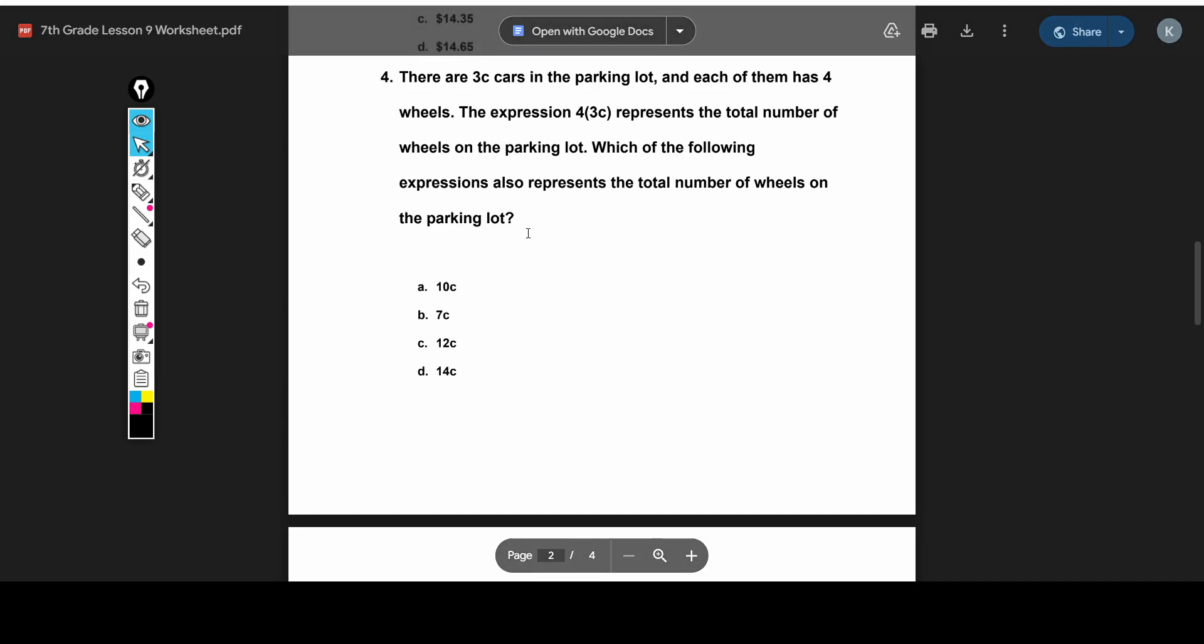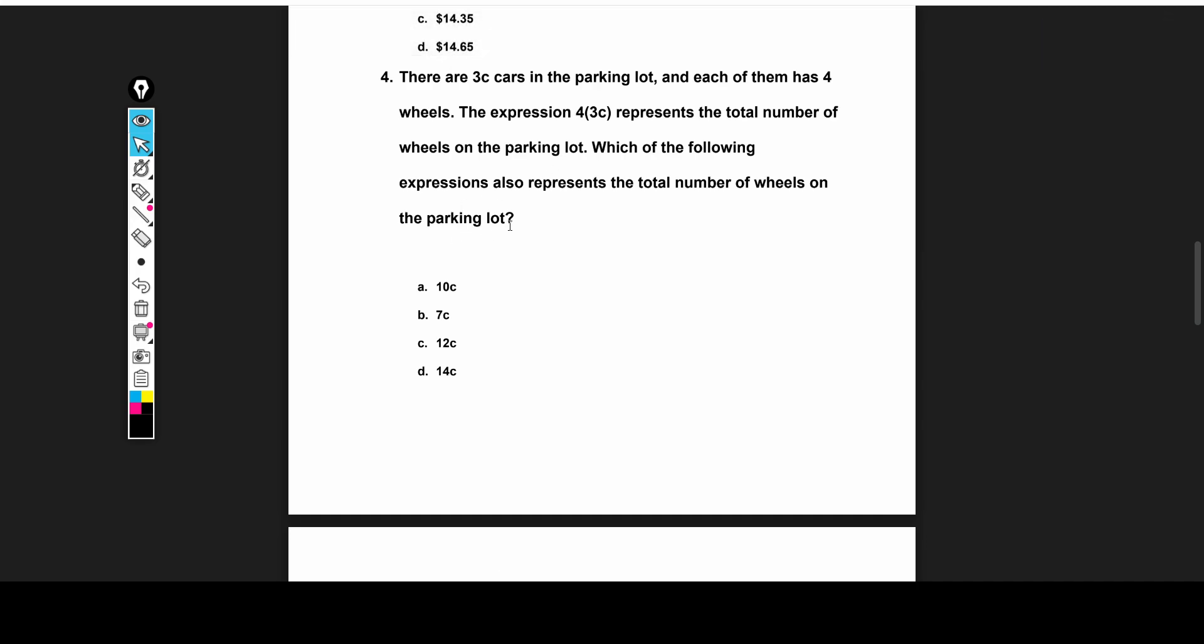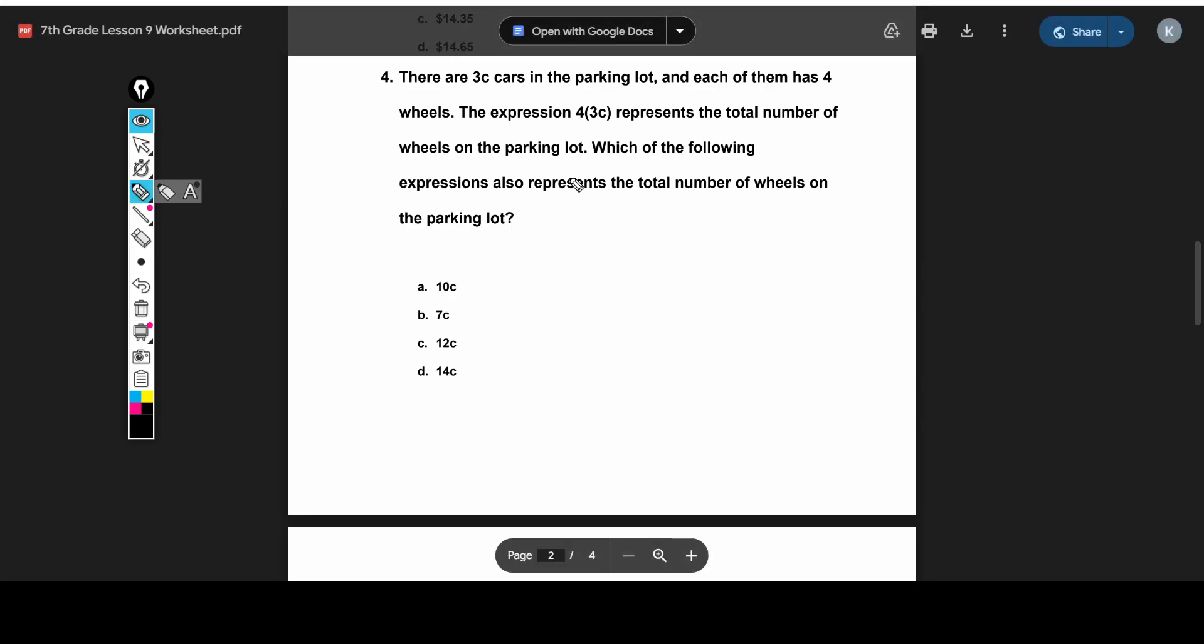Alright, and on the next problem, we have 3C cars, and each of them has 4 wheels. So this expression, 4 times 3C, is the total number of wheels. And so we want to find another expression that represents the same thing. And that means it should be equal to this. And so 4 times 3C, well, 4 times 3 is 12. So this is just 12C. Just like that.